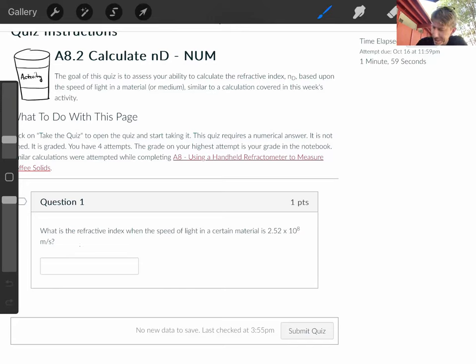We know that the refractive index n_D is equal to the speed of light in a vacuum over the speed of light in the material.